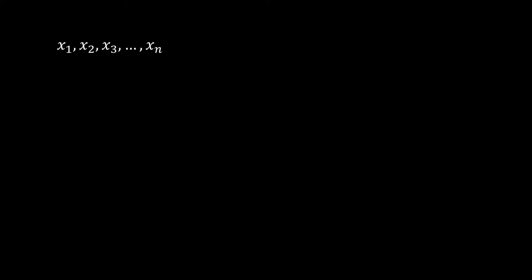Each variable denotes a truth value, meaning that it can be either true or false. Sometimes we write these as 1 and 0. The second ingredient are logical operators, which are used to construct complex statements about the values of the variables.